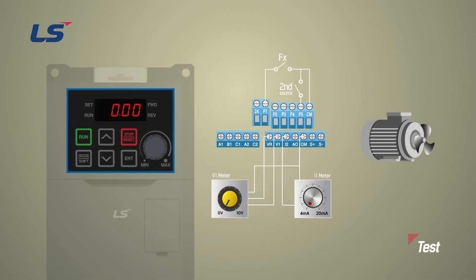Let's test it. Set the multifunction input terminal P5 as 15 second source and set the command source as the terminal block. The frequency reference source of the original operation will be set as 0 to 10 volts and the frequency command of the second operation will be set to 4 to 20 milliampere. Adjust the voltage source to 2.5 for 14 hertz and set the current source to 12 milliampere.